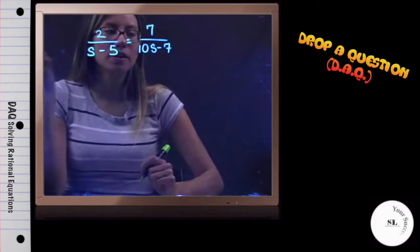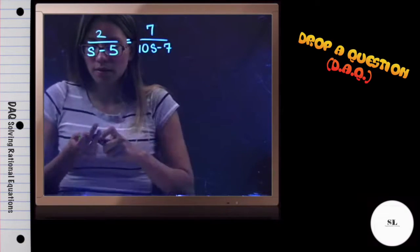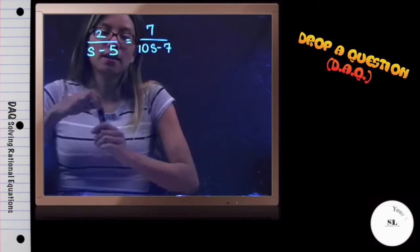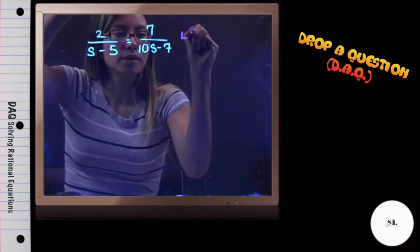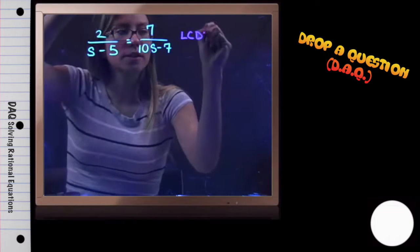The first step we are going to do is find the LCD, because they are not the same denominators, and we need to make them the same denominators when solving rational equations.